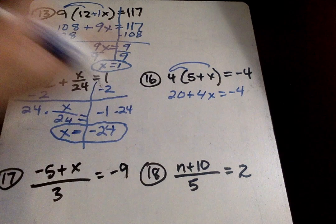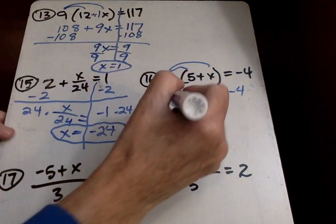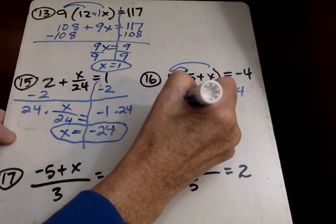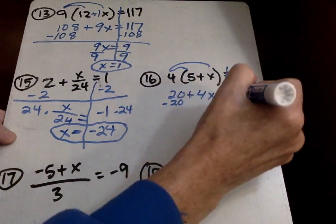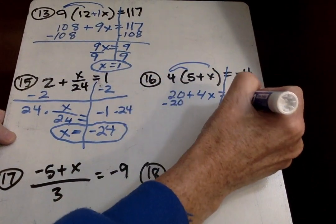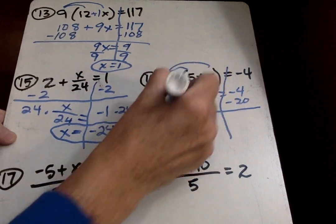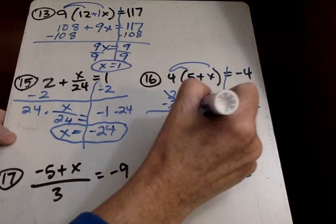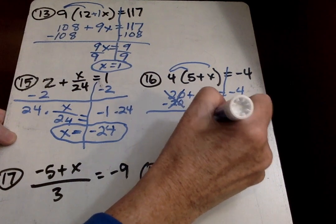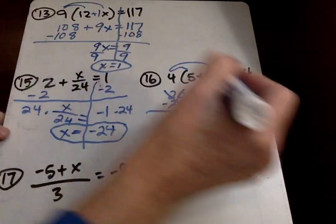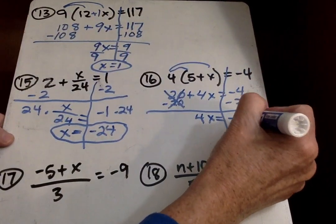Now I've got to get rid of the 20, just like I got rid of the 108. Whatever I do on this side of the equation, I have to do over here. Watching that sign. If it's positive, I don't need to worry about it. Negative 4 minus 20, negative 24.